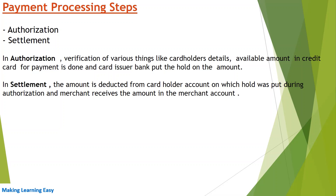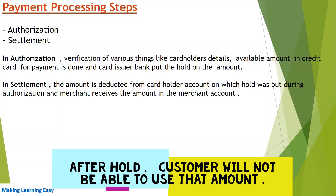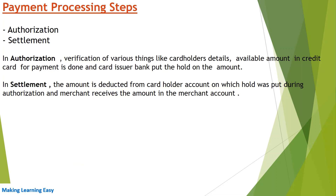In authorization, the card issuer bank puts a hold on the amount. In settlement, the amount is directed from the cardholder account on which the hold was put during authorization, and the merchant receives the amount in the merchant account. In settlement, only the merchant gets the amount in their account. In authorization, the merchant does not get any amount — there is no movement of funds; only a hold is put on the payment amount.